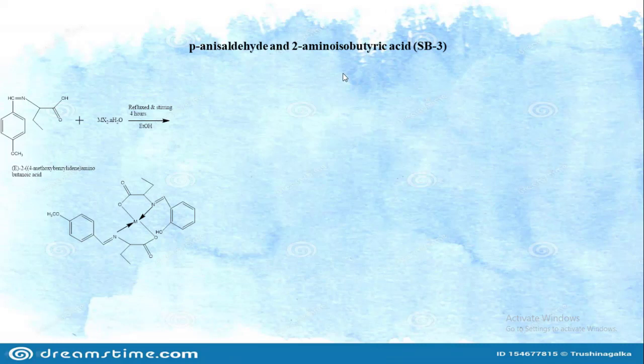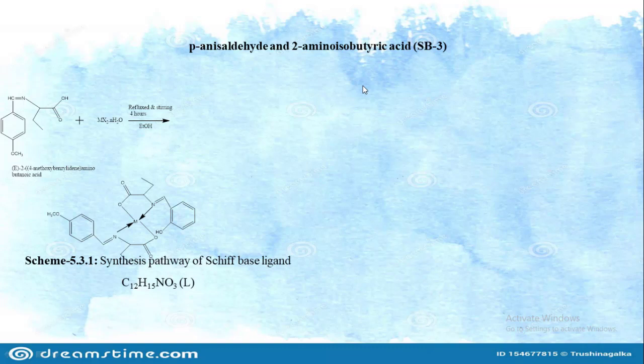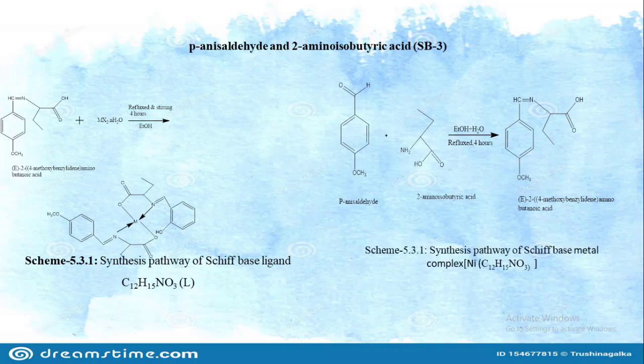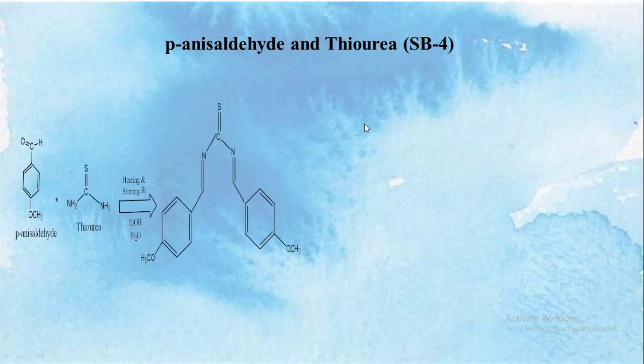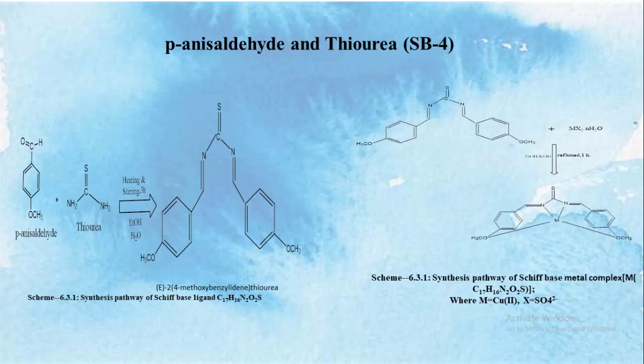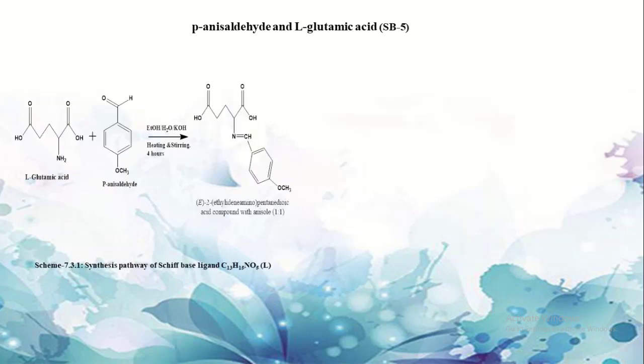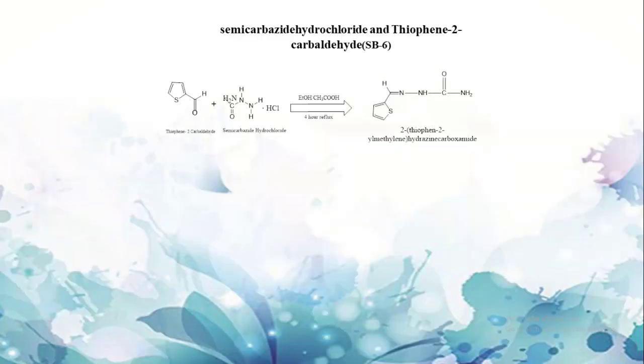P-anisaldehyde and 2-amino isobutyric acid, Schiff base ligand three. Their equation with molecular formula and complex formation. P-anisaldehyde and thiourea, Schiff base ligand four. P-anisaldehyde and L-glutamic acid, Schiff base ligand five. Semicarbazide hydrochloride and thiophene-2-carboxaldehyde, Schiff base ligand six.